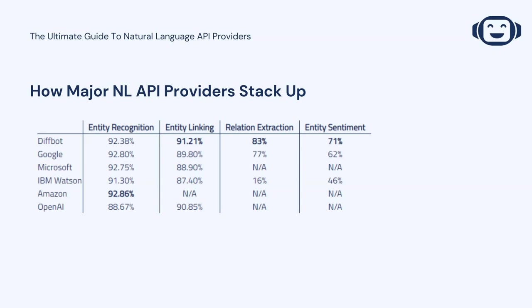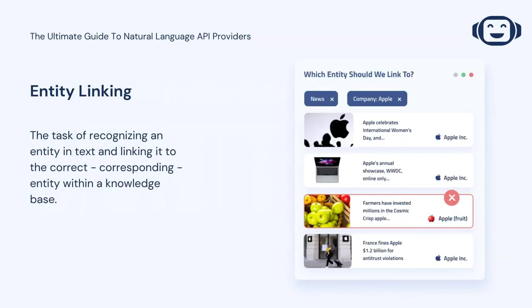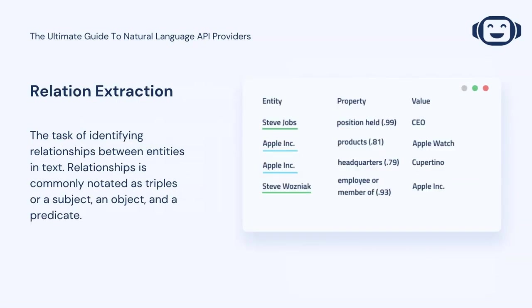So we've talked about how the first benchmark of entity recognition is measured, but what about the others? Entity linking is the task of recognizing an entity in text and linking it to the correct corresponding entity within a knowledge base. The most popular benchmark for measuring entity linking is the TAC-KBP-2010. This is an important benchmark if you're trying to structure unstructured text in a way that augments your existing data stores. Relation extraction is the task of identifying relationships between entities in text. Relationships are commonly notated as triples — basically a subject, an object, and a predicate. This is an important natural language function if you're trying to build out a graph database, or if you want to pull out a chronology of relationships, or if you want to analyze complex interactions between entities. The common benchmark here is KnowledgeNet 2019.